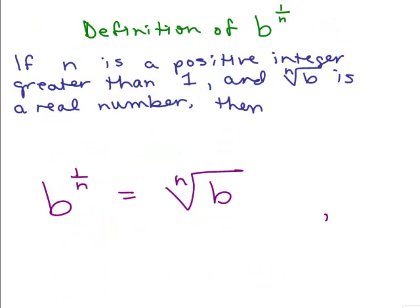So now let's go to the definition of B to the 1 over N. If N is a positive integer, greater than 1, and the Nth root of B is a real number, so we're only talking about real numbers, then B to the 1 over N is simply the Nth root of B.